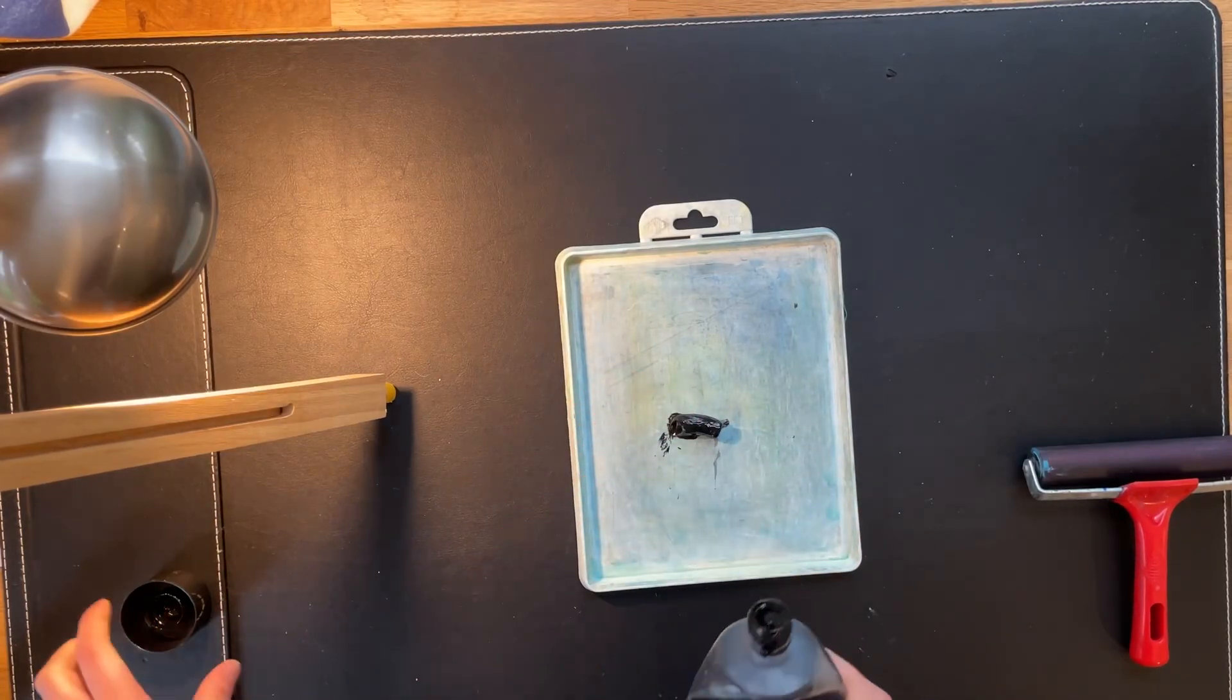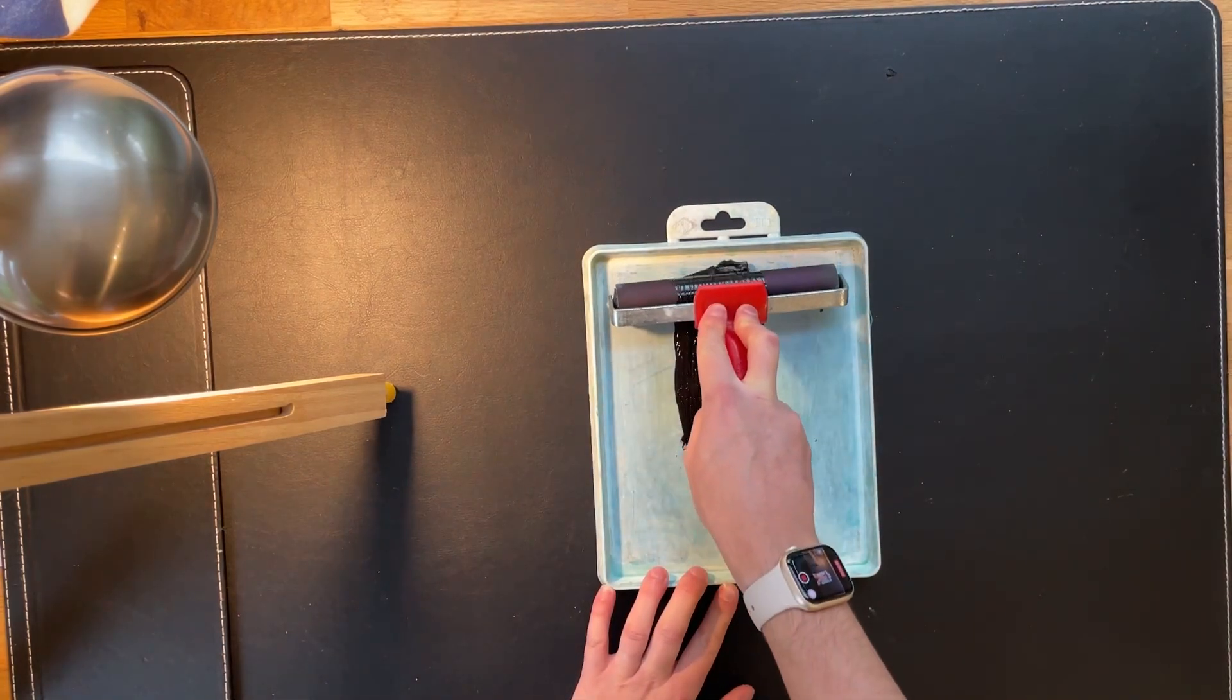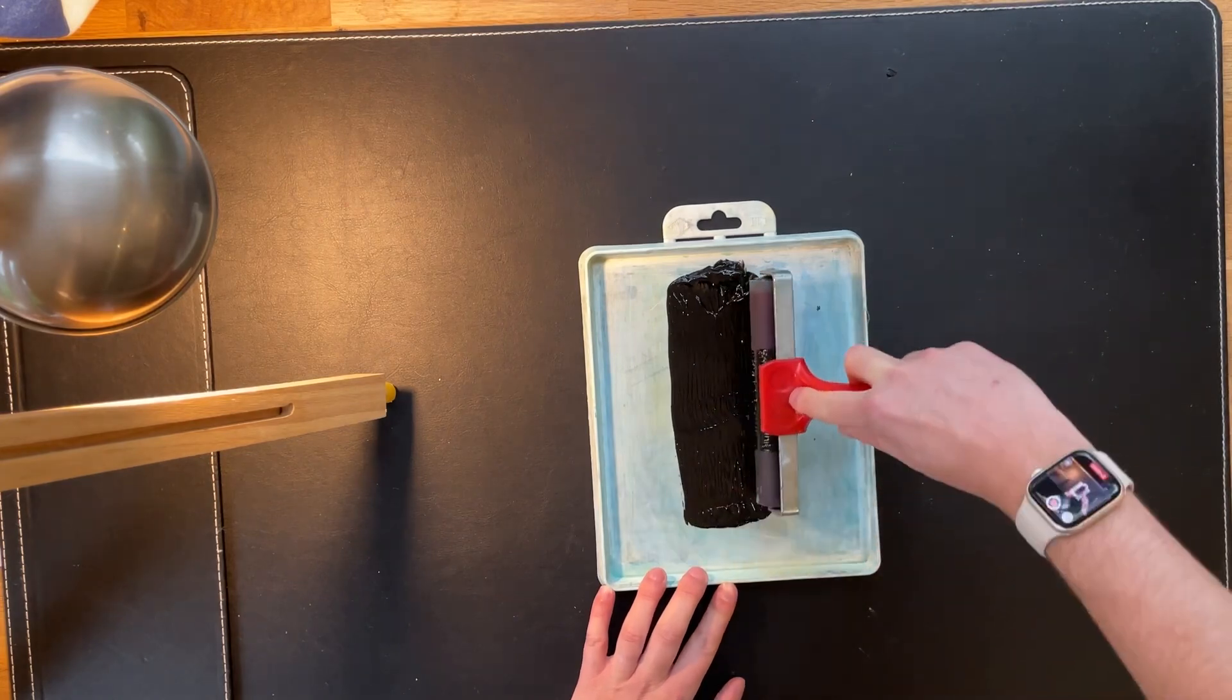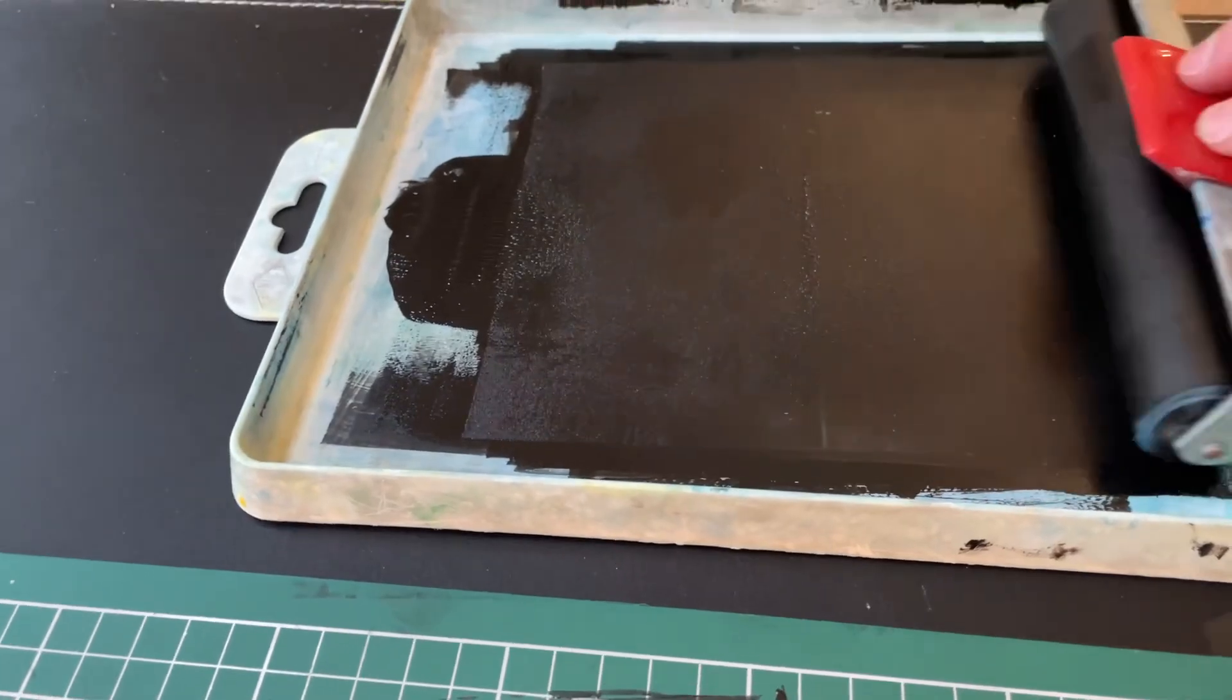So I lay down some ink and I need to get this spread over the roller nice and thinly and in an even coating. And for a lino print this size I do actually need to put in quite a lot of ink.